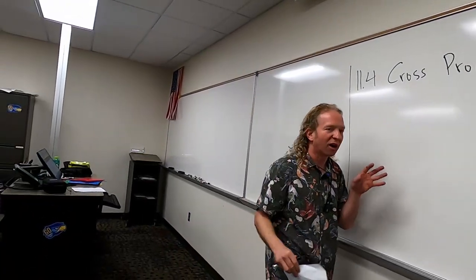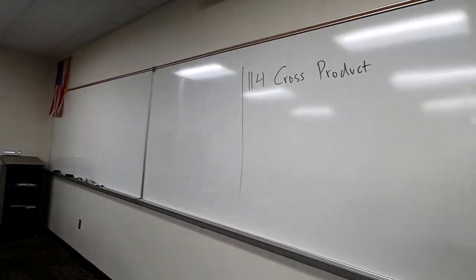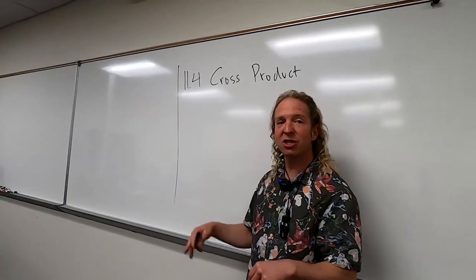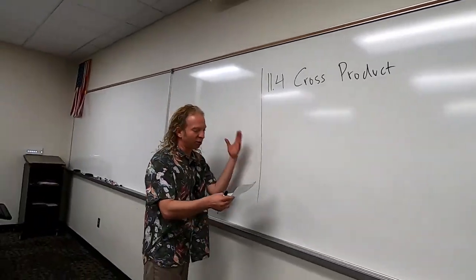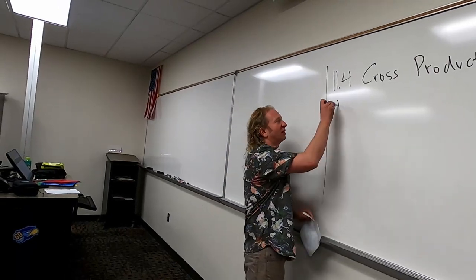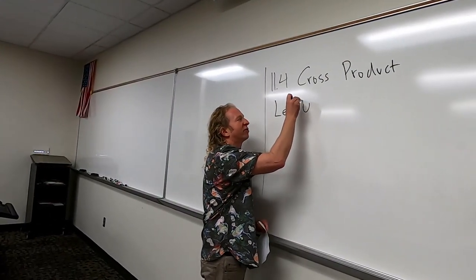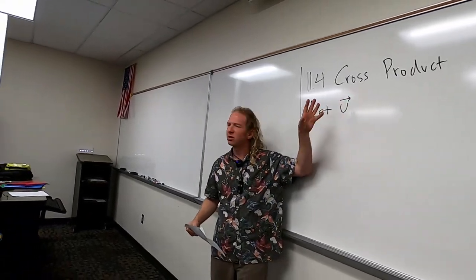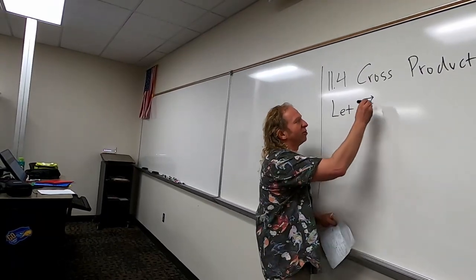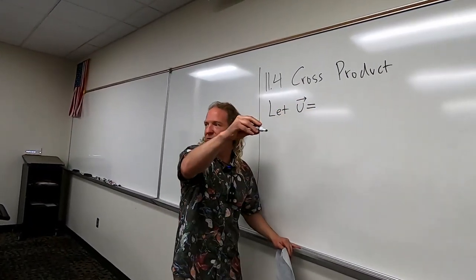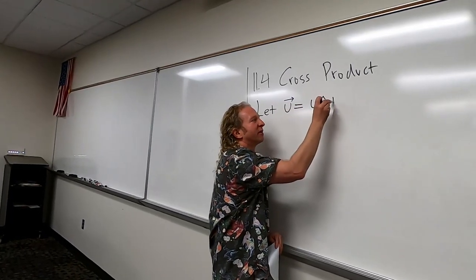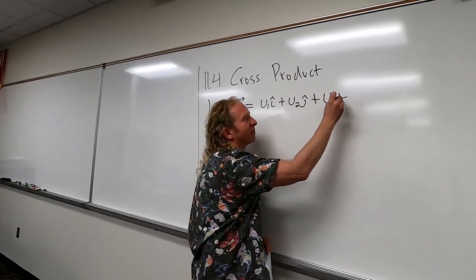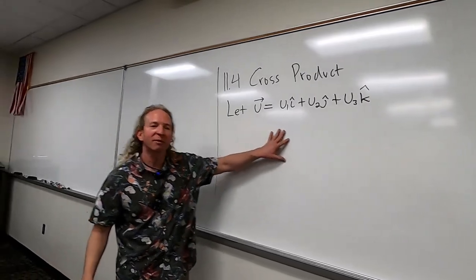We're going to take what's called the cross product of two vectors. It's a new operation — a vector operation. This is going to come up everywhere in the course, not just in this section but in future sections as well. So let me give you the definition. Let u be a vector — we put arrows over our vectors. So u equals u1 i-hat plus u2 j-hat plus u3 k-hat, written as a linear combination of i, j, k.